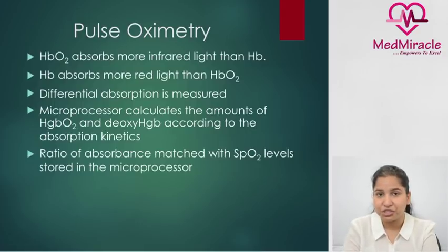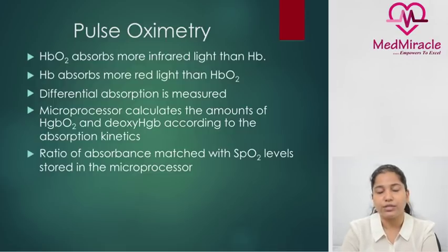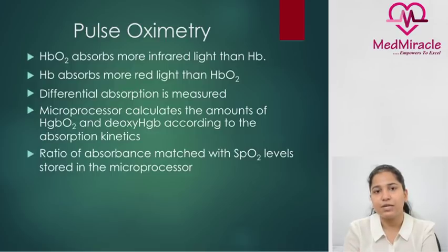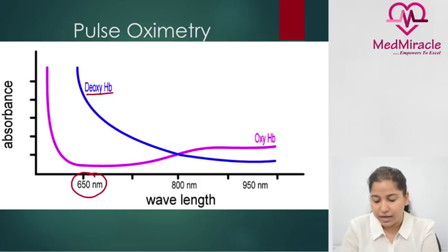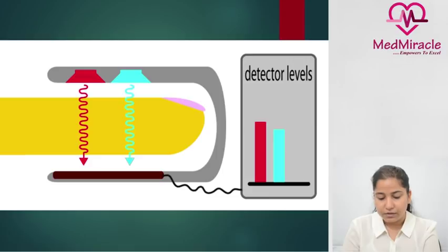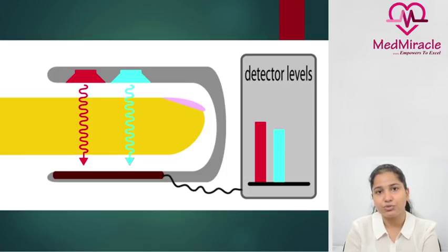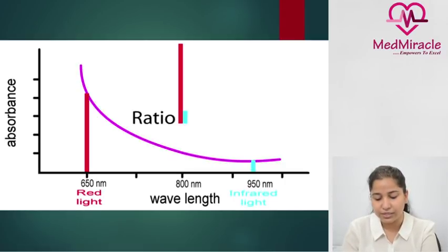Differential absorption is measured by the pulse oximeter, and a microprocessor calculates the amount of oxyhemoglobin and deoxyhemoglobin according to the absorption kinetics. A ratio is created and accordingly a value known as SpO2 — saturation of oxygen — is displayed. At 650 nanometers, deoxyhemoglobin has higher absorbance, and at 950 nanometers, oxyhemoglobin has higher absorbance. The ratio of these two absorptions is calculated to determine the SpO2 value; higher the ratio, higher the saturation in blood.